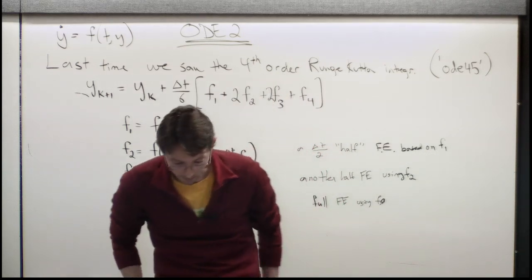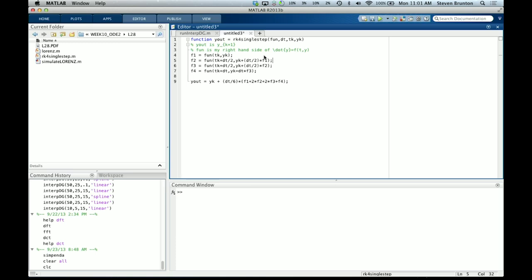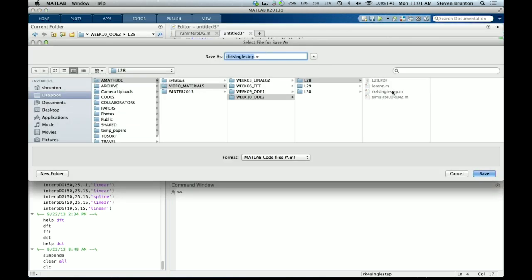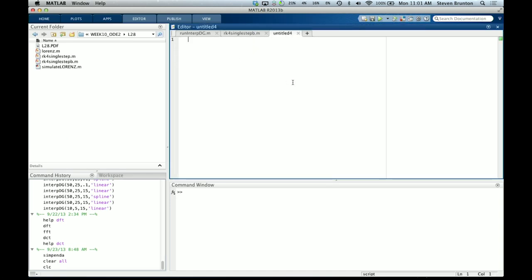F1 is F evaluated at TK, YK. F2 is F at TK plus delta T over 2, YK plus delta T over 2 F1, F3, and F4. So this is what we have. And then the last step is to say YK plus 1 is YK plus delta T over 6, and then add up these Fs. Let's go back to MATLAB. Now just a quick question to the class: Is it possible for me to cut F2 and put it ahead of F1? That's right. It's not possible because I use F1 when I'm evaluating F2. So I need to do these in order. That's really important. This is my fourth order Runge-Kutta single step integrator. I'm going to save that as RK4 single step. And I really hope that I don't mess up my code. So I'm going to call it B.